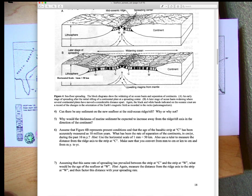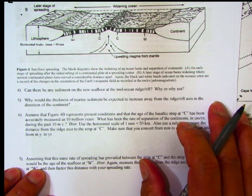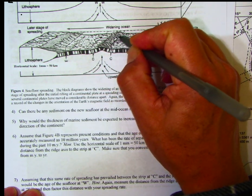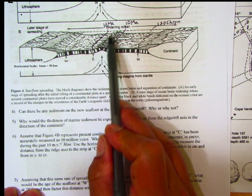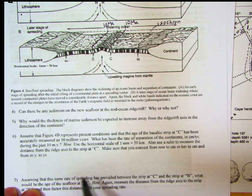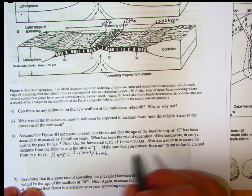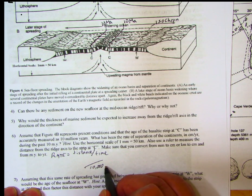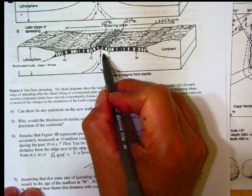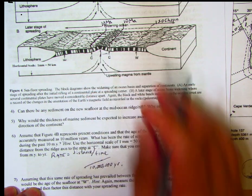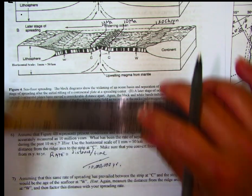For problem six, we're given that isochron C is 10 million years old. Ten million years ago, C was at the ridge axis and has since spread to its current position. Our job is to figure out the spreading rate. Rate equals distance over time. We have the time — 10 million years — so we need to measure the distance from the ridge axis out to letter C.